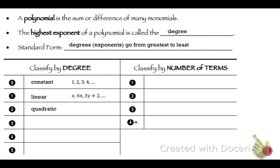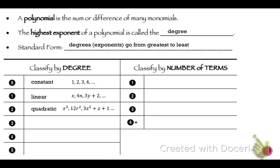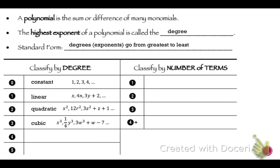Degree 3 is cubic — the graph has an S-like shape. Examples: x cubed, 1/4 y cubed, 3w cubed. Quartic looks a lot like the quadratic — it's a U shape, like x to the 4th. Quintic is similar to cubic — one end up, the other end down — like x to the 5th. We'll learn more about their graphs later; right now we're not worried about that.